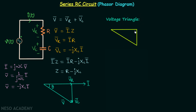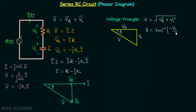For the voltage triangle, the base is VR, the perpendicular is VC, and the hypotenuse is V. The angle is theta. From this triangle: V equals √(VR² + VC²), the power factor angle theta equals tan⁻¹(−VC/VR), and the power factor cos theta equals VR/V. The power factor will be leading because the impedance has a capacitive nature.